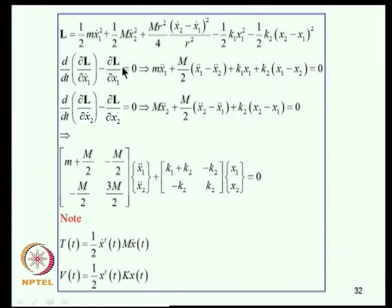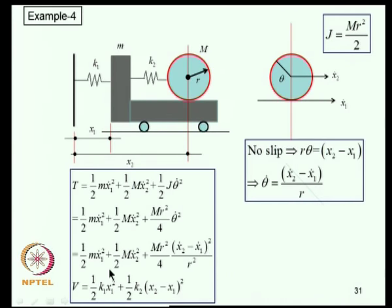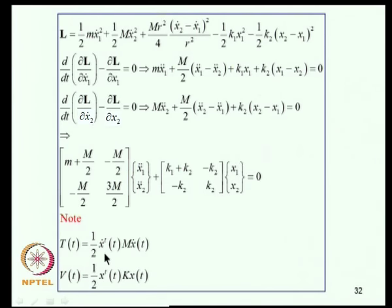Applying the Lagrange equation gives two equations of motion for X₁ and X₂, expressible in matrix form. Defining vectors X = {X₁, X₂} and Ẋ = {Ẋ₁, Ẋ₂}, kinetic energy is ½ẊᵀMẊ and potential energy is ½XᵀKX. This is the structure of kinetic and potential energy for linearized systems - small displacements are assumed.